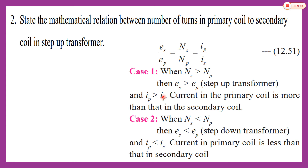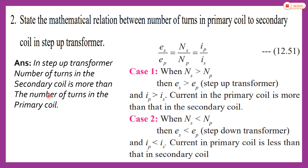In a step-up transformer, the output voltage is more than the input voltage, and the output current is less than the input current. In a step-down transformer, the number of turns in the secondary is less than the primary and the output voltage is less than the input voltage. The mathematical relation for a step-up transformer is NS > NP — that is the correct answer.